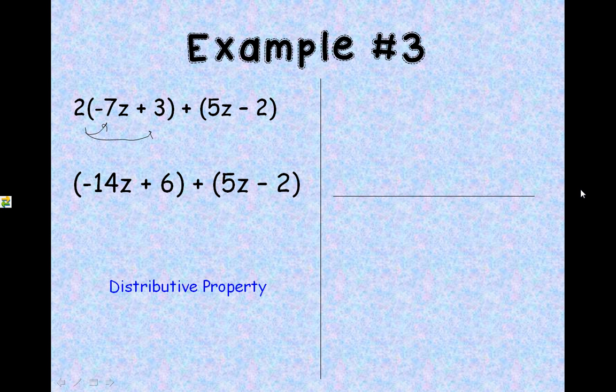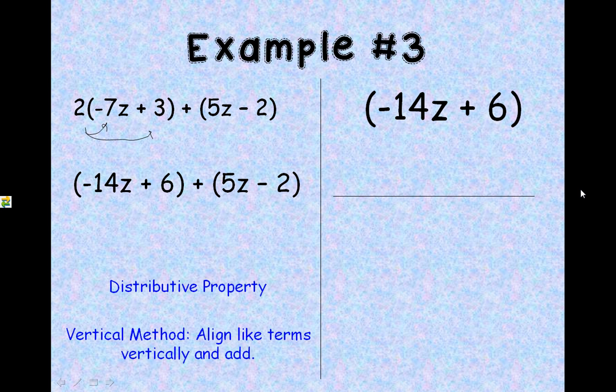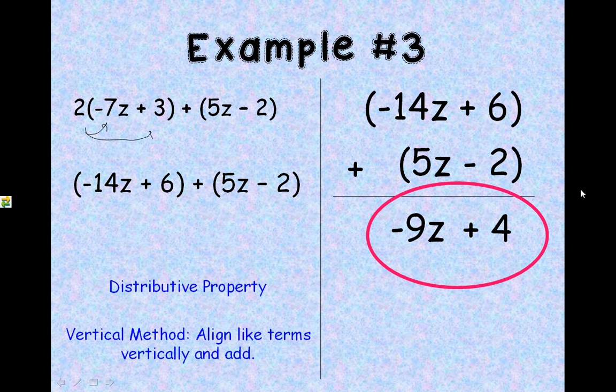And now we're going to continue as we were earlier. Use the vertical method. Make sure our terms, our like terms are lined up. And now we can add. We have plus 6, positive 6, minus 2, which gives me positive 4. We also have a negative 14z plus 5z, which would give me a negative 9z. And that is our answer. We cannot simplify any more.